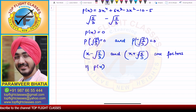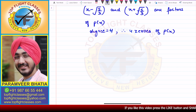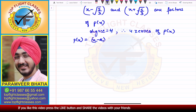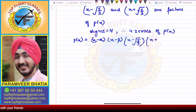Since the maximum power is 4, the degree is equal to 4, which means we will have 4 zeros of the polynomial p(x). Two have been given to us. So I can write p(x) = (x - α)(x - β) · (x - √(5/3)) · (x + √(5/3)), where α and β are the other two zeros.